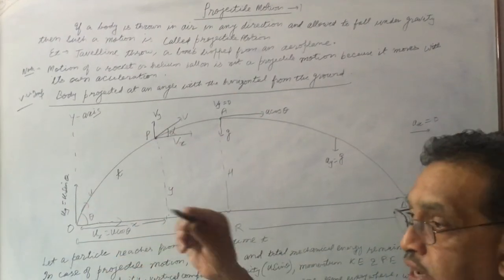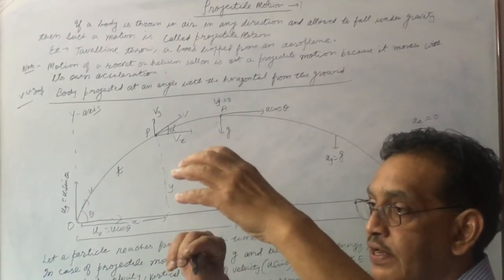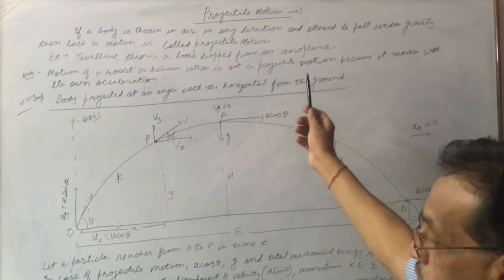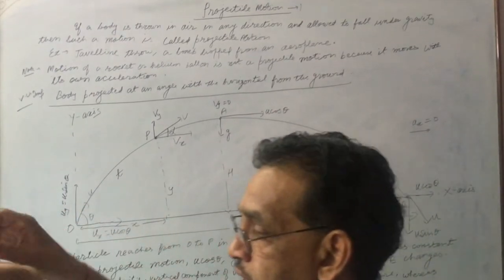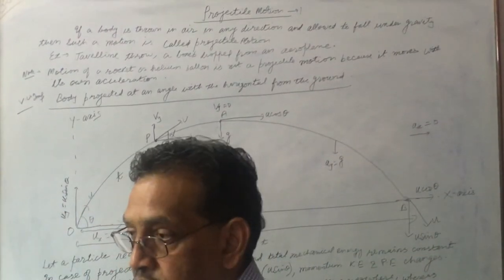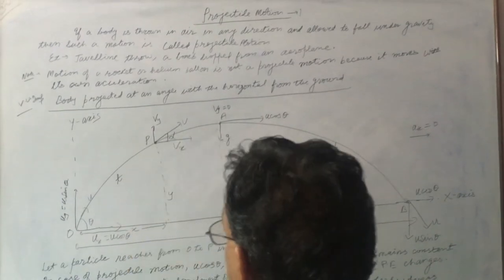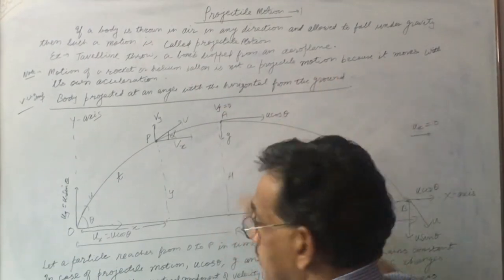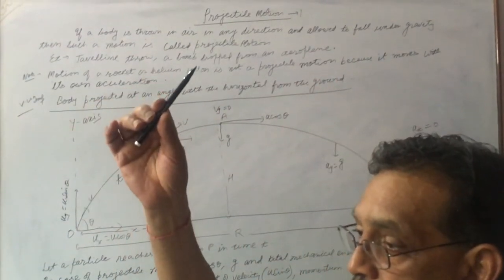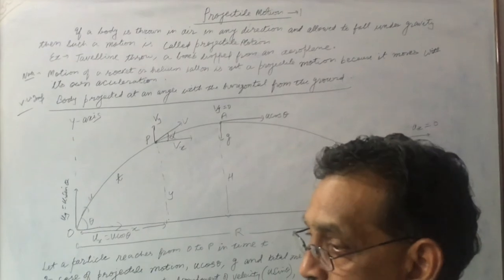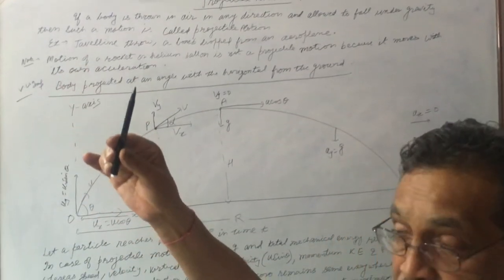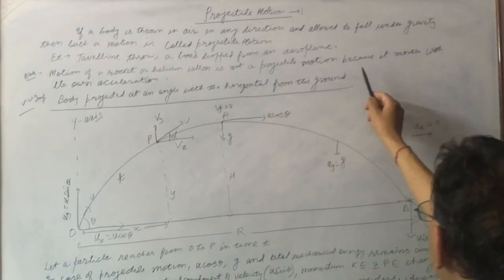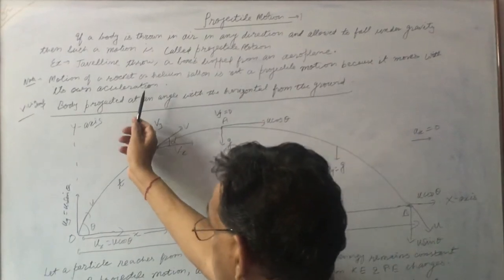Examples of projectile motion include a javelin throw, a food packet dropped from a helicopter, and a pen. However, motion of a rocket or helium balloon is not projectile motion because it moves with its own acceleration.